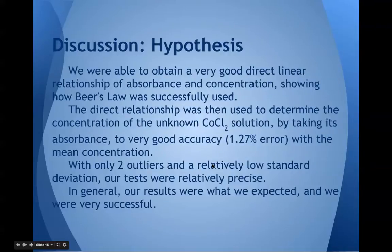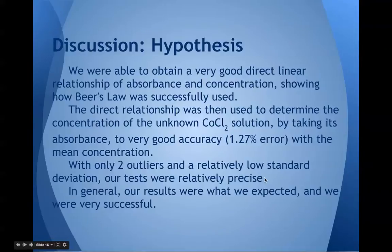We were able to obtain a very good direct linear relationship of absorbance and concentration, and this shows how Beer's Law was successfully used. The direct relationship was then used to determine the concentration of the unknown cobalt chloride solution by taking its absorbance, and the concentration was determined to a very good accuracy of 1.27% error. With only two outliers and a relatively low standard deviation, our tests were also relatively precise. Overall, our results were what we expected, and our lab was very successful.